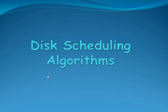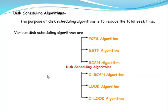In this video, we are going to discuss one of the disk scheduling algorithms. The purpose of disk scheduling algorithms is to reduce the total seek time — that is, the number of head movements made by the disk must be minimal. Various disk scheduling algorithms are available: FCFS, SSTF, SCAN, CSCAN, LOOK, and CLOOK. Now we will discuss the FCFS algorithm in detail.